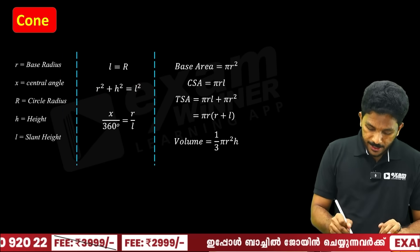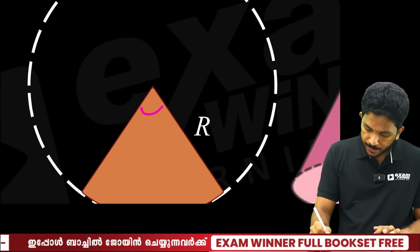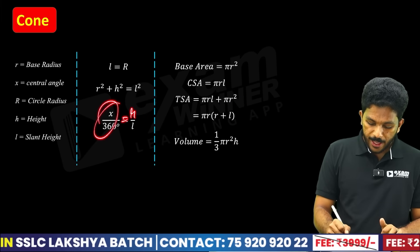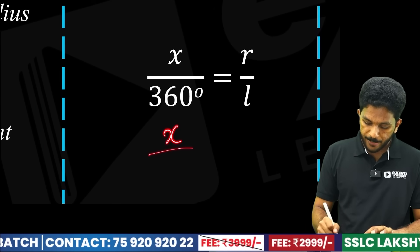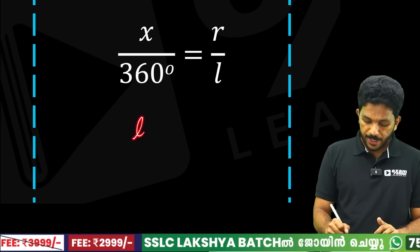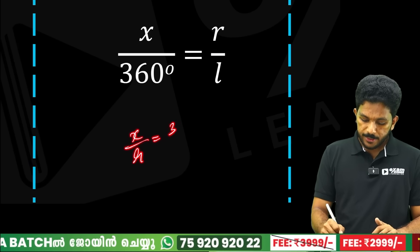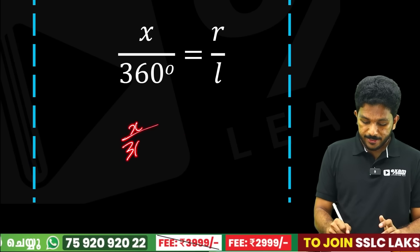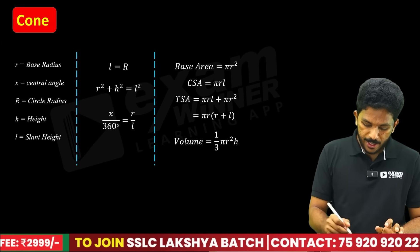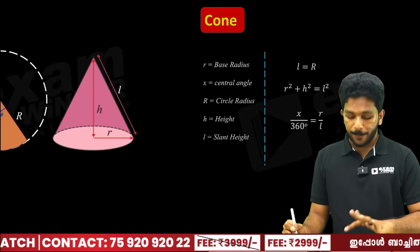That is a relation we get by heart. There is also an angle x degrees at the apex. The relation is: x/360 = R/L. From this we can derive x × L = 360 × R. Now the base area is πR².